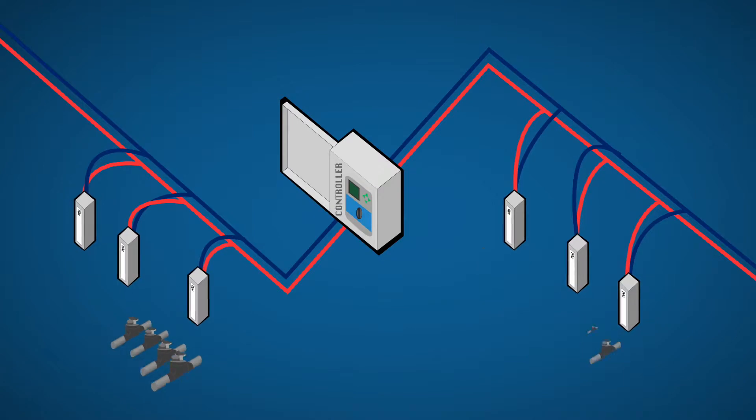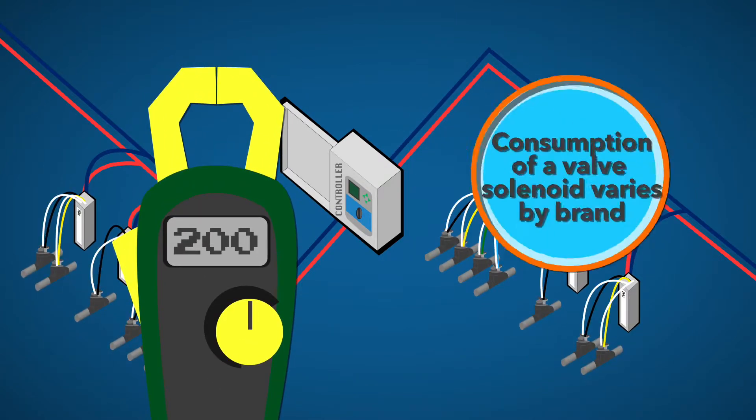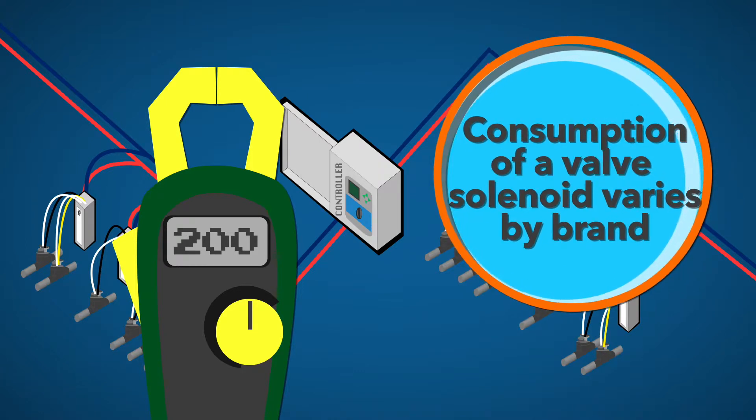If we were to activate a zone, the energized solenoid will add about 200 mA of additional current flow. The consumption of a valve solenoid varies by brand and is published in the manufacturer's catalog.